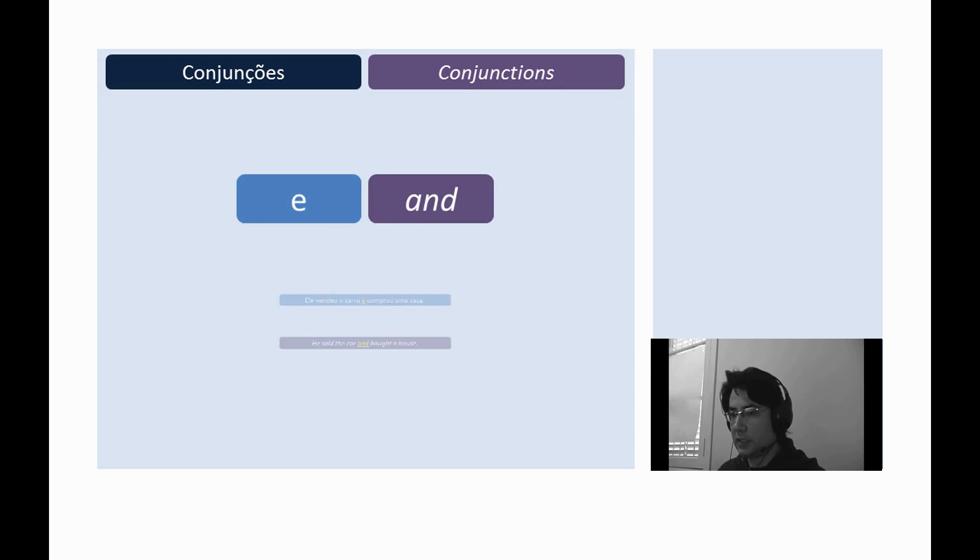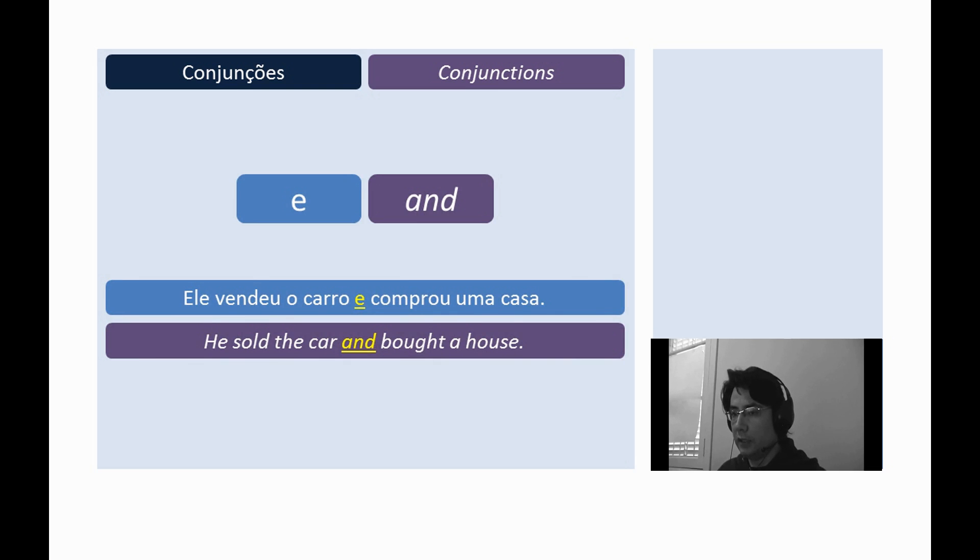E means 'and'. Ele vendeu o carro e comprou uma casa. He sold a car and bought a house.